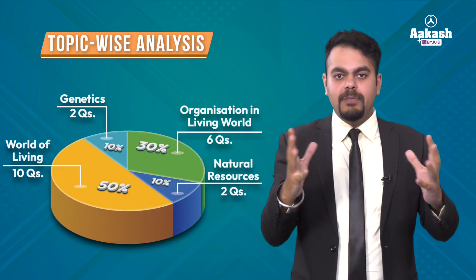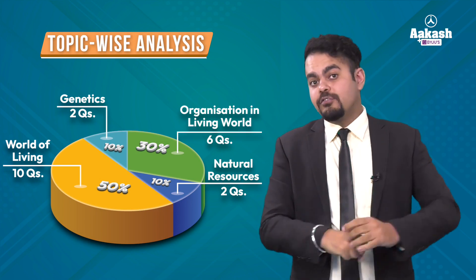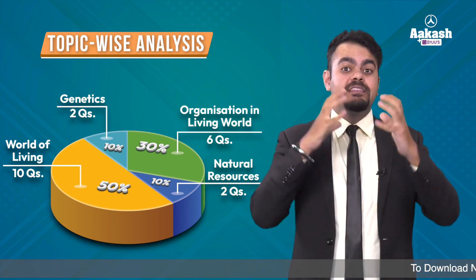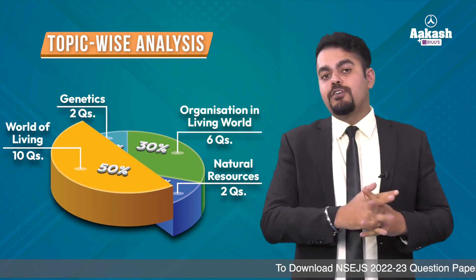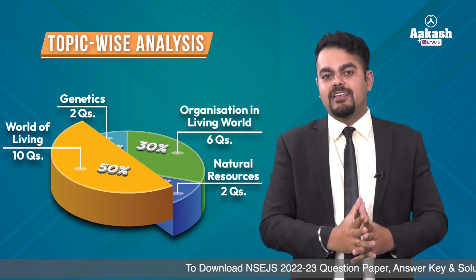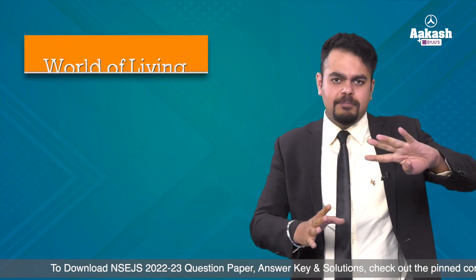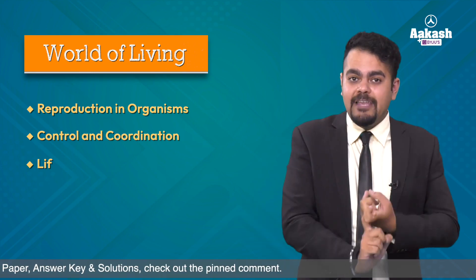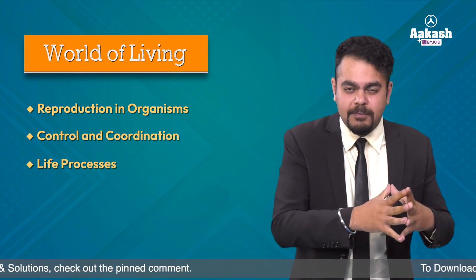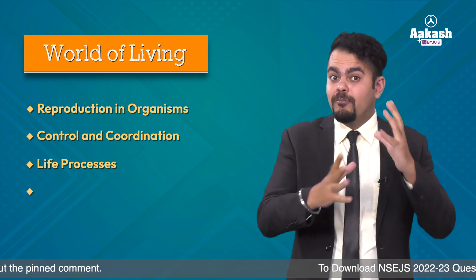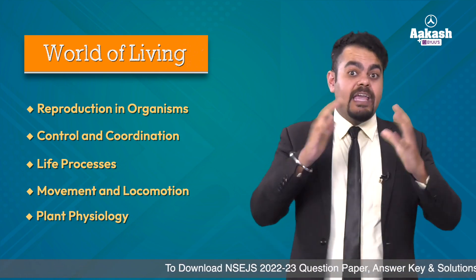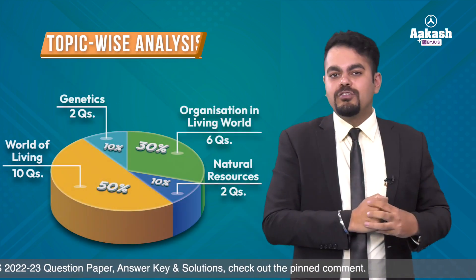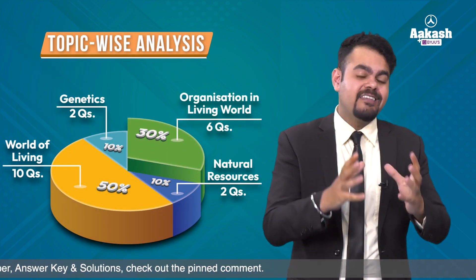The major topics were grouped into four units. The first unit, 'World of Living,' had the maximum questions — 50 percent of the biology section, which is 10 questions. This unit covers chapters like How Do Organisms Reproduce, Control and Coordination, Life Processes, and Movement and Locomotion from plant physiology, spanning Class 10th through 12th.